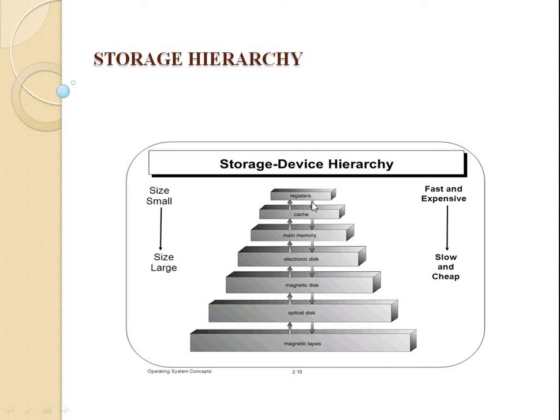Registers are the fastest of all memories. A register is a group of flip-flops, with each flip-flop capable of storing one bit of information. An n-bit register has a group of n flip-flops and can store any binary information of n bits. Cache memory is a special, very high speed memory — it is the intermediate memory between the CPU and main memory, used to store segments of the program currently being executed and frequently needed data.